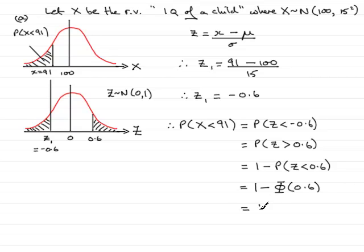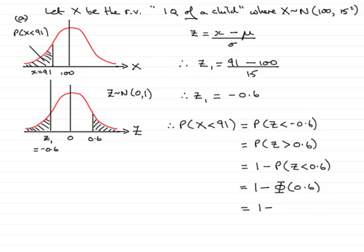So all I need to do now is look up the value of phi of 0.6 in tables. So if we bring some tables up, we've got a set of tables here, and I'm looking for 0.6 for the z value, and you'll see it's in this column here.